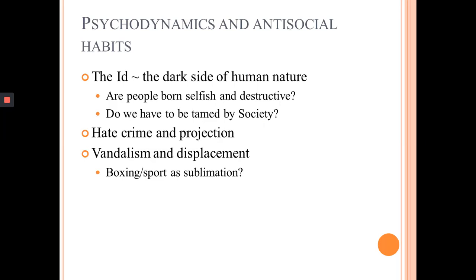Stuck in the middle between the id and the superego is your ego — your sense of self — which is trying to negotiate the demands of the id to do everything instantly, and the demands of the superego which is very aware of society, law and order, and what will people think. It develops various forms of defence mechanism — coping strategies — to deal with the stresses that ensue. Freud came up with around 30 of them; we'll touch on some as we go along. Two examples are projection and displacement, both of which can be easily related to crime.